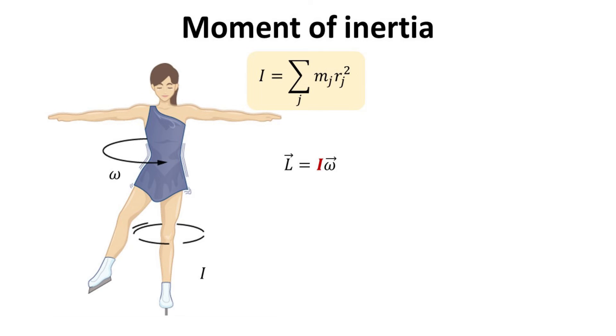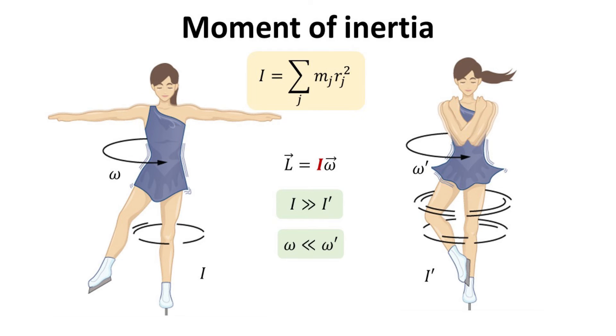Consider an ice skater with extended arms spinning with an angular speed of omega. Let us denote her moment of inertia as I. By closing in her arms, she reduced her moment of inertia. However, angular momentum L must be conserved. This then implies that the angular velocity omega must increase. This is the physics behind the ice skater's dazzling spin.